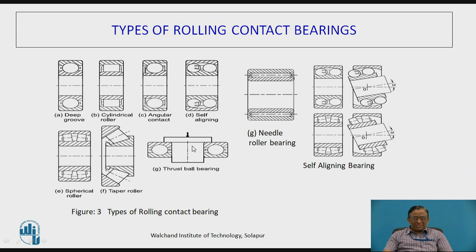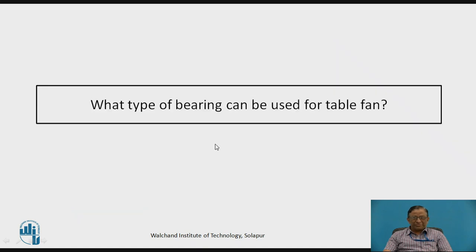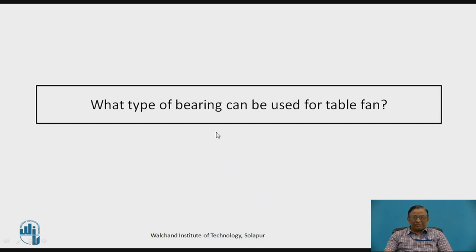This is the thrust bearing in which the thrust load is applied and accordingly the construction supports the load. Now pause the video and think over this point: what type of bearing can be used for a table fan?